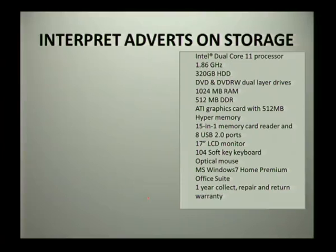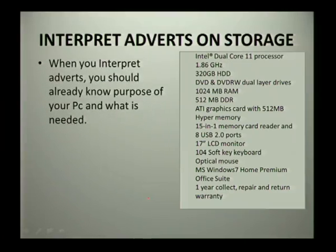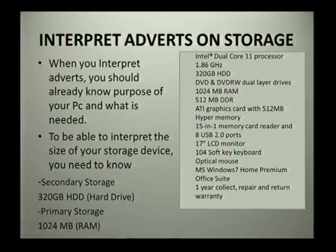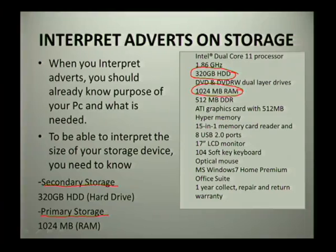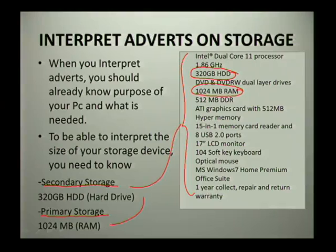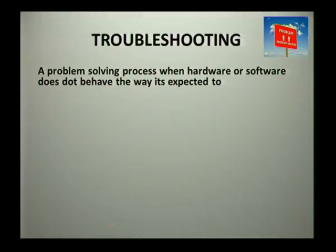Now we look at interpreting adverts in terms of storage. When interpreting an advert, you should already know the components of your PC and what is needed. In this advert, you can see a 320GB hard drive and 1024 megabytes of RAM — those are the two types of storage shown. One is permanent and one is temporary. You need to identify which items indicate primary storage and which indicate secondary storage.